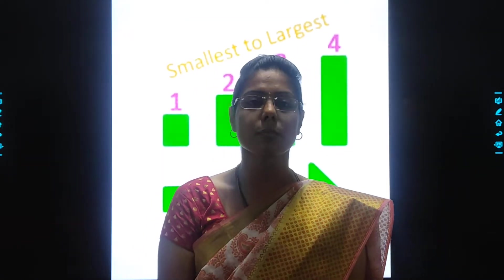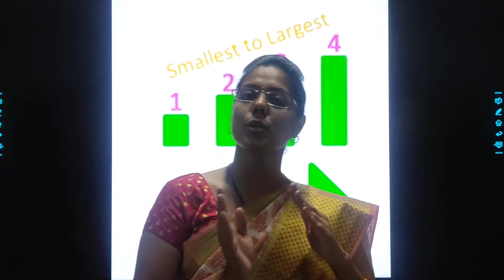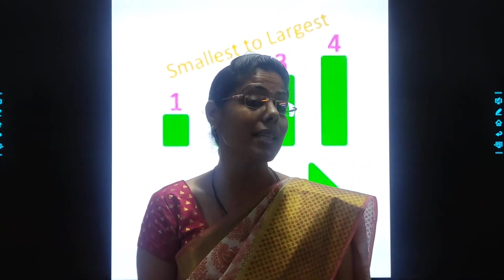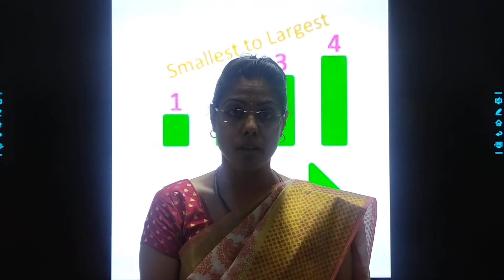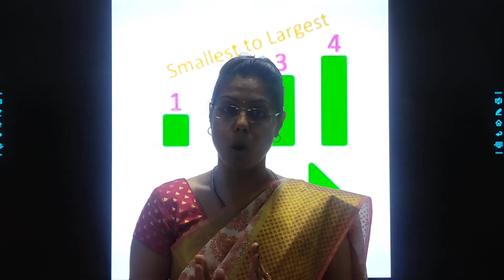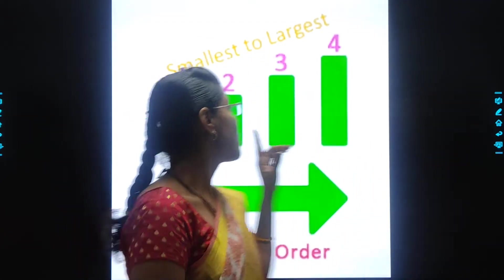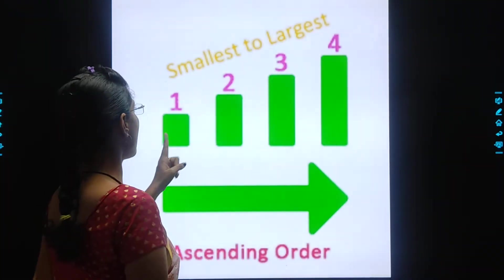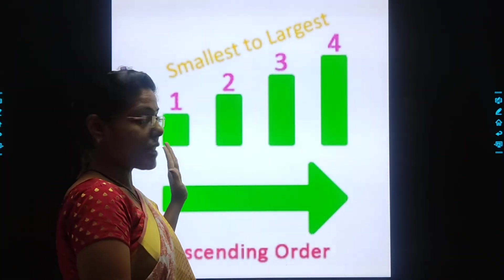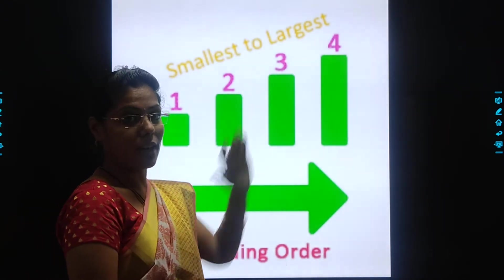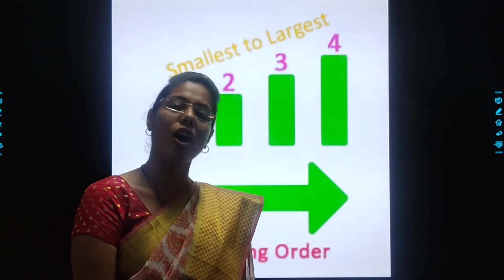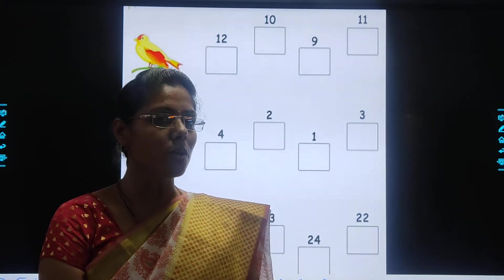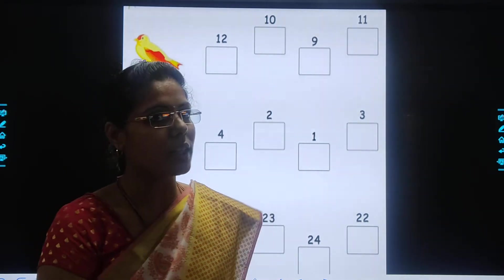Ascending order means from smallest to biggest number. Chote se bada number. Ascending order means from smallest to biggest number — smallest to largest. Chote se bada number — that is called ascending order. So kids, come on, let's do practice of ascending order.